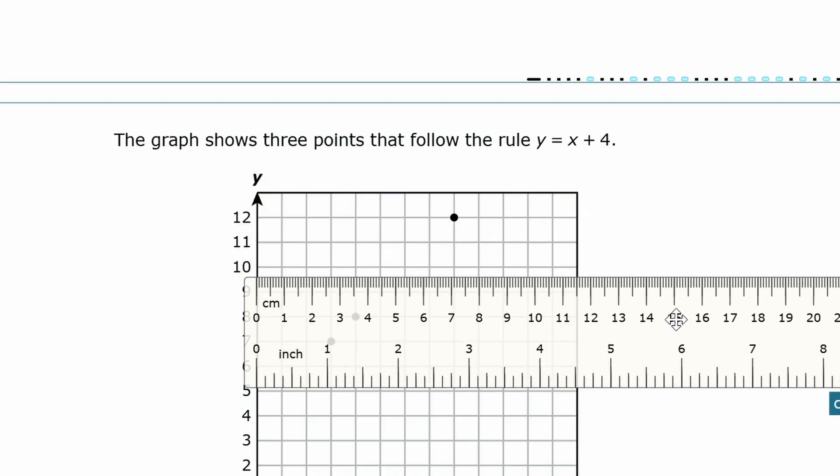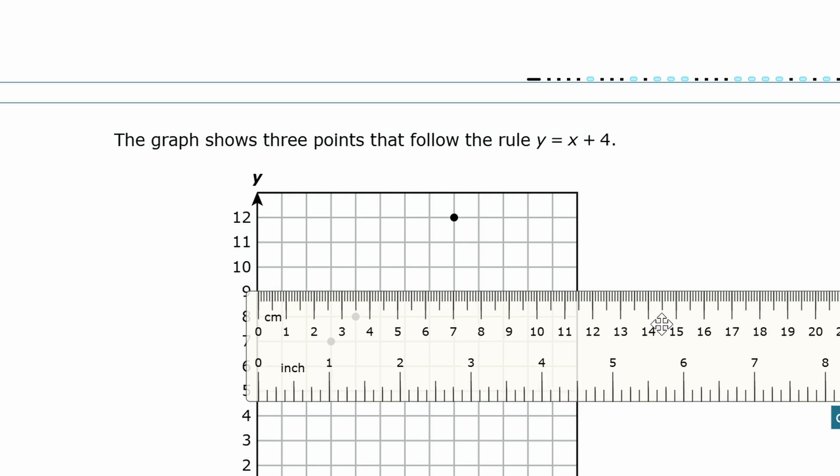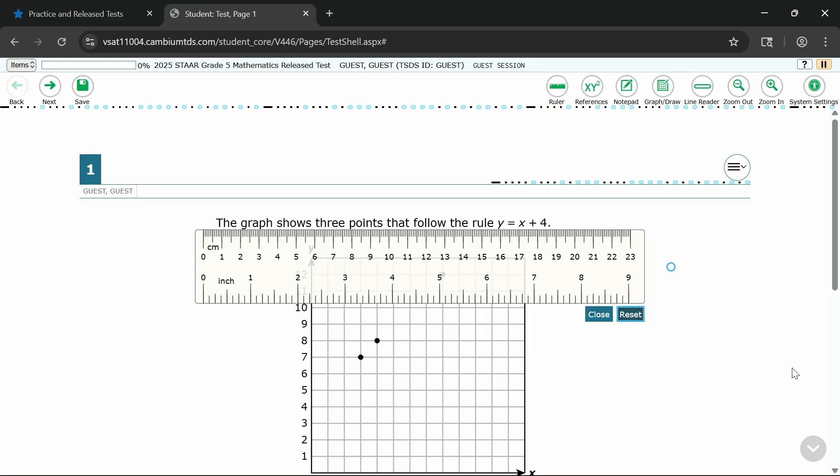To measure, line up the zero marker with the starting point of what you're measuring. Need to start over? Just click reset, and the ruler will go back to the center of the page.